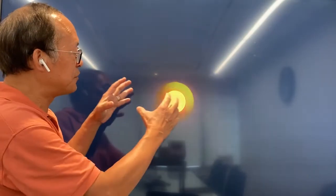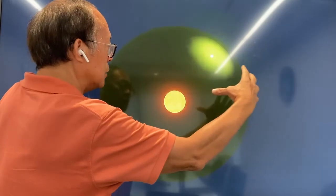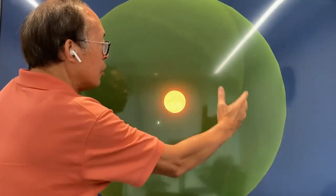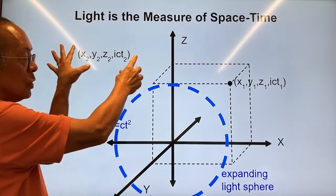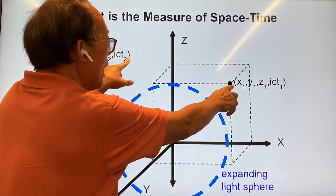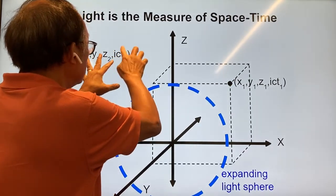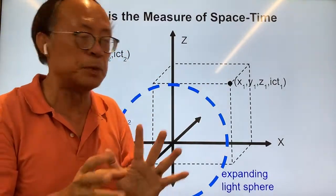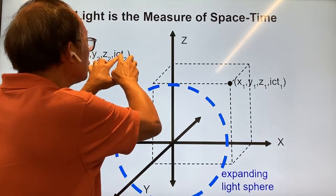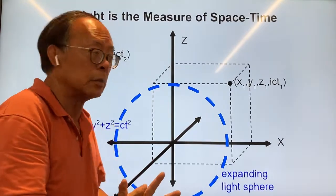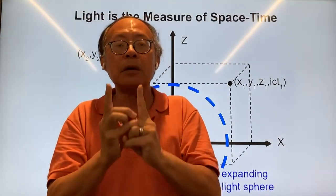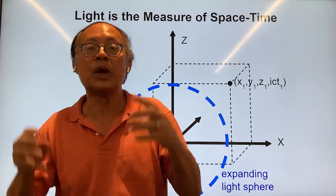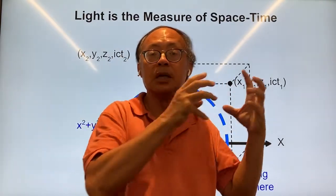Now you can see the expanding sphere — for example this is a supernova and the light is coming out like this. This is a description of the surface of the light sphere: x² + y² + z² = c²t². We can calculate the distance between two events (x1, y1, z1, i·c·t1) and point p2 by subtracting each component and squaring the difference — the Euclidean distance between the two points. Here i has a negative contribution as in Pythagoras: i² + 1 = 0. So this distance measure means the time component, having an imaginary value, actually subtracts from the Euclidean spatial distance.